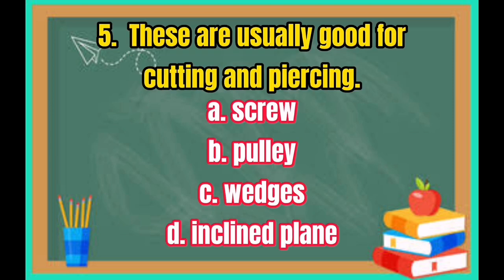Number 5: These are usually good for cutting and piercing. A. Screw. B. Pulley. C. Wedge. D. Inclined plane.